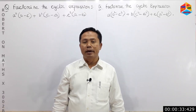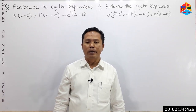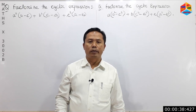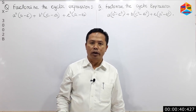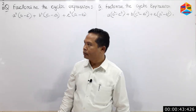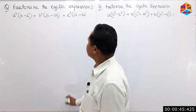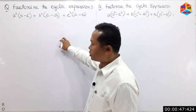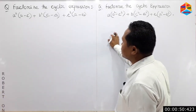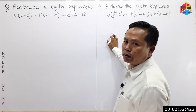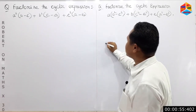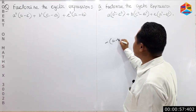The next step is to get the factorization of a cyclic expression. I'll ask a question about the factorization. I'm going to talk about how to factorize this expression. The answer is minus of (a minus b),